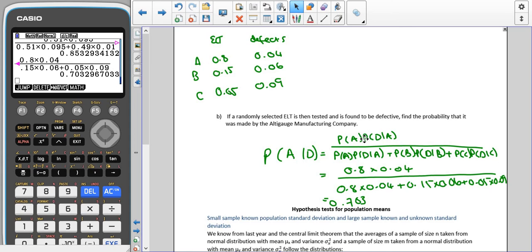So that means using Bayes' theorem, we'd have the probability of A times the probability that it was defective, given that it was A, divided by the probability of A times the probability that it was defective, given that it was A, plus the probability of B times the probability that it was defective, given that it was B, plus the probability of C, times the probability that it was defective, given that it was C, which gives us 0.8 times 0.04 divided by 0.8 times 0.04 plus 0.15 times 0.06 plus 0.05 times 0.09 which gives us 0.703 which we can see here.